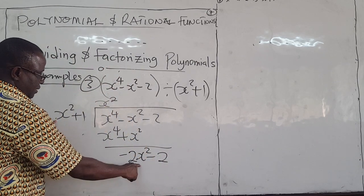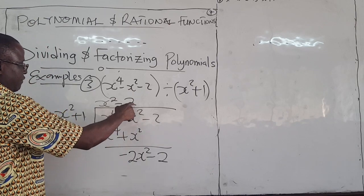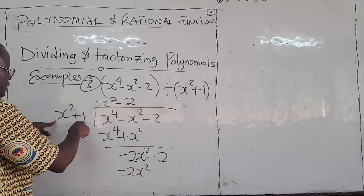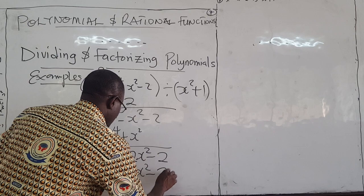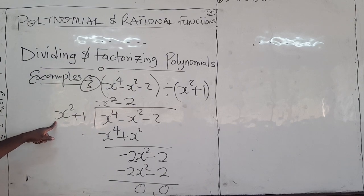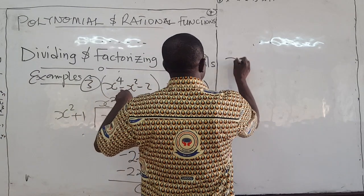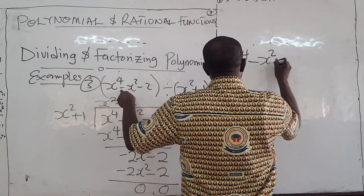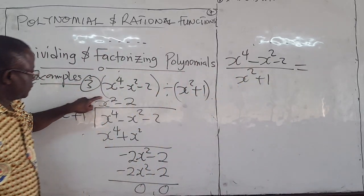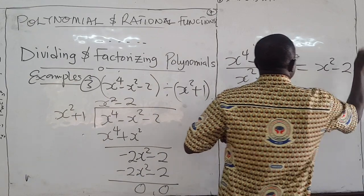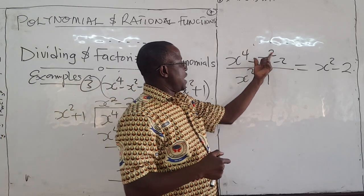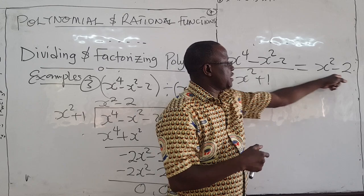Now, x squared goes into that, we have a negative 2. So, I have negative 2 times x squared, I get a negative 2x squared. Negative 2 times 1 is negative 2. Now, if I subtract that, it's 0. It's 0. So, now there's no remainder. So, if I divide, this means that x to the power 4 minus x squared minus 2, if I divide it by x squared plus 1, I just get this guy, x squared minus 2, without a remainder. Which also means this guy is equal to the product of this, the numerator and that.